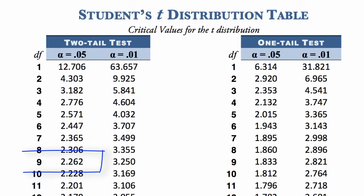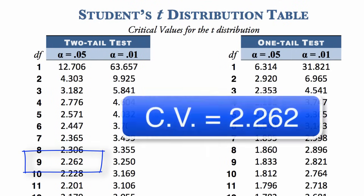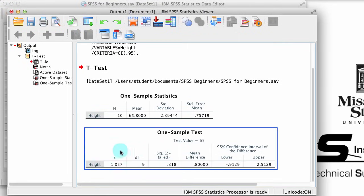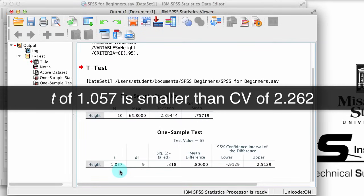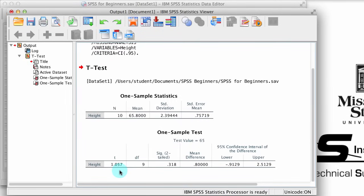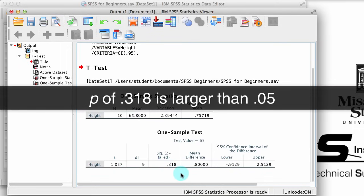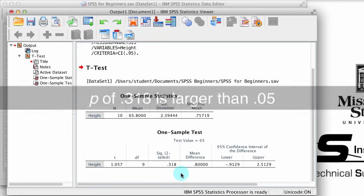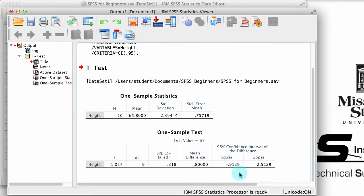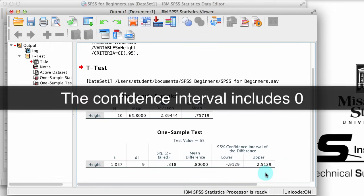I looked up the critical value on Student's t-table and I found that for a test with 9 degrees of freedom, the critical value is 2.262. This t-value is smaller than 2.262. I can see that the p-value is .318, which is larger than .05. And finally, I can see that the lower confidence interval is negative but the upper value is positive, so this confidence interval crosses zero.